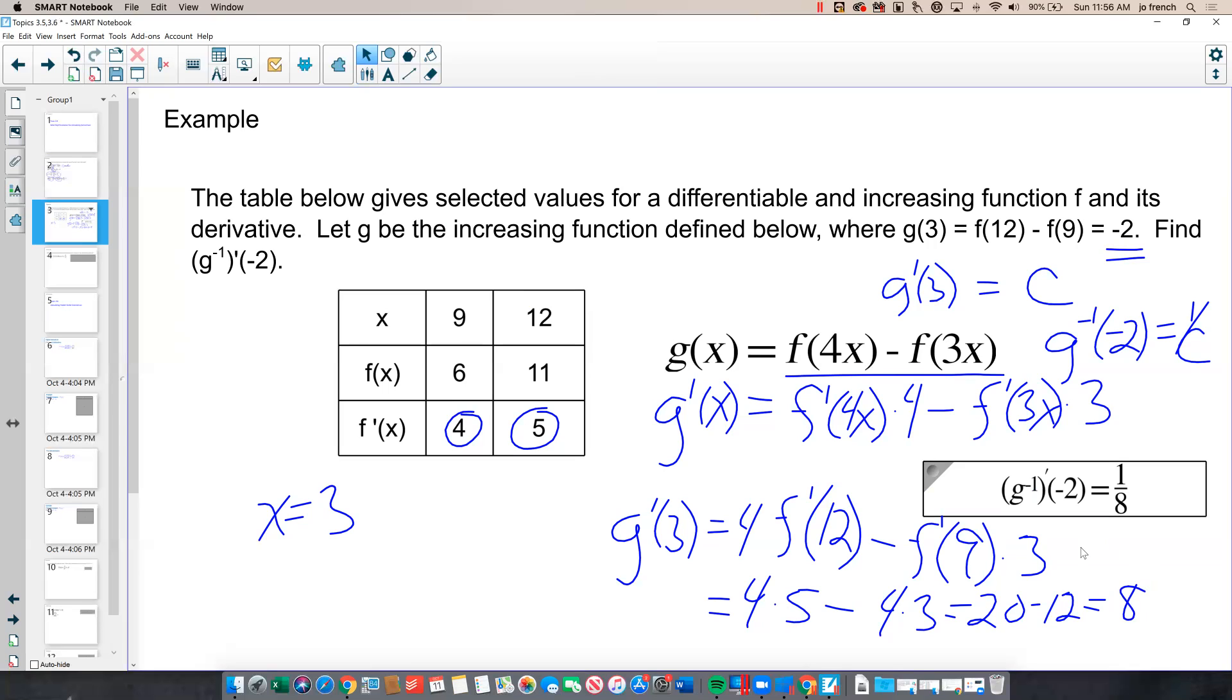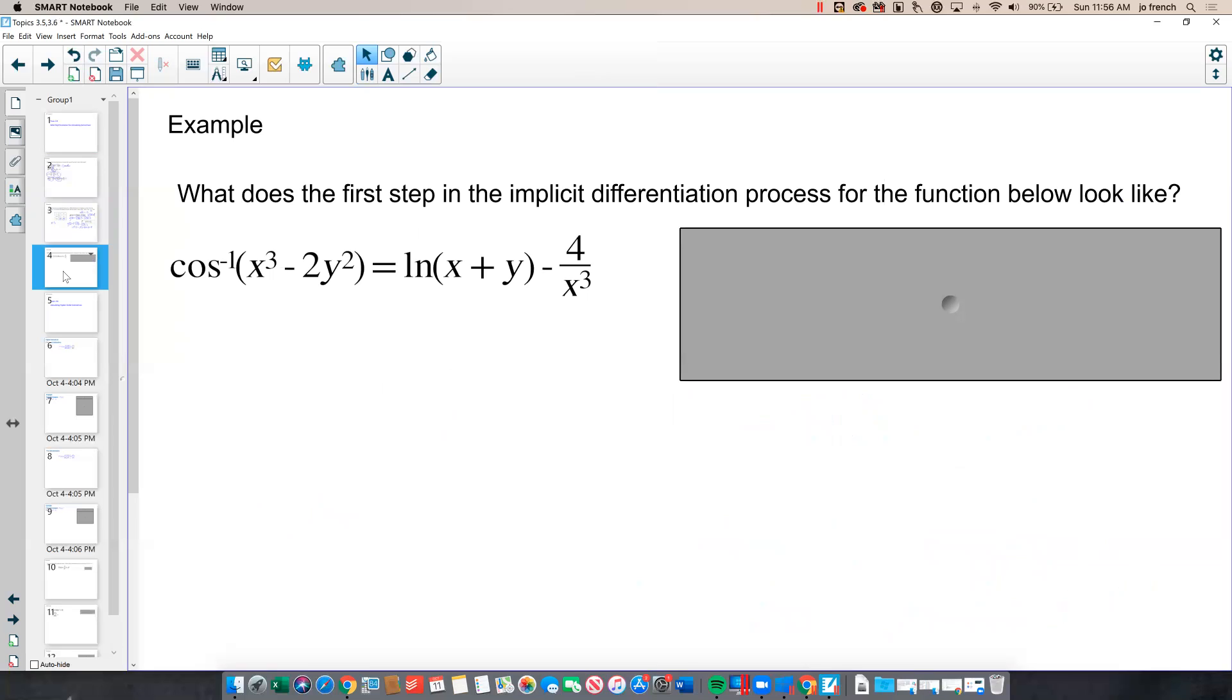Let's look at one more example. What does the first step in the implicit differentiation process for the function below look like? Okay, so here we've got a lot of stuff going on. I have the inverse cosine of x cubed minus 2y squared. And on the right hand side, I've got the natural log of x plus y minus 4x to the third.